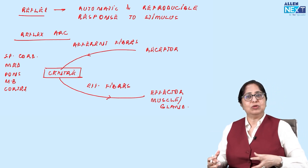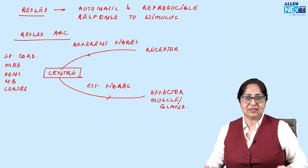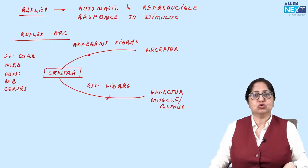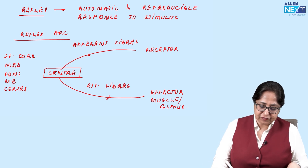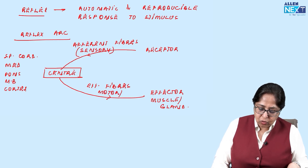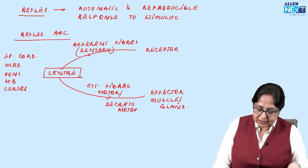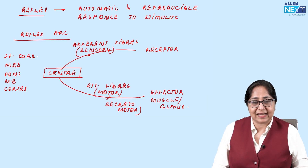Efferent fibers going to a gland are known as secretomotor fibers. Efferent fibers going to a muscle are known as motor fibers. Afferent fibers are sensory, and efferent fibers will be motor or secretomotor — if they go to a gland, they are known as secretomotor fibers. This is what a reflex arc looks like.